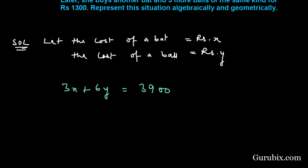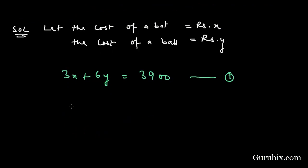This is equation number 1. In the second condition, she buys 1 bat and 3 balls for Rs 1300, and this is our equation number 2.